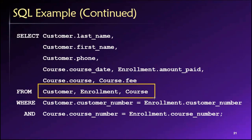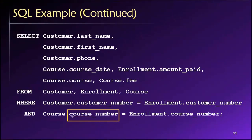So we tell the database, the customer number in the customer table needs to match the customer number in the enrollment table. And the course number in the course table needs to match with the course number in the enrollment table. So we're telling it how to link all of these things together. And then that's all we need to do. The database will go out and do all the work for us and give us the results.